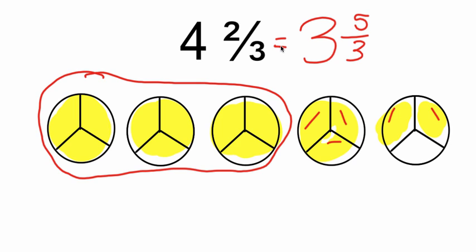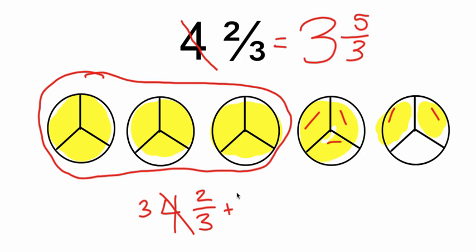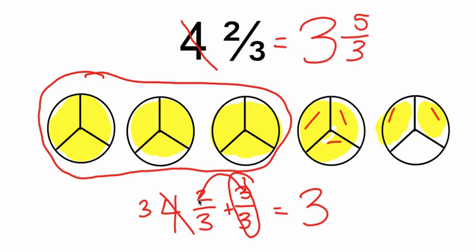So four and two-thirds is the same thing as three and five-thirds. All we did here was take a whole away from four, going from four down to three. When we took that whole away, we got three extra pieces. So if our fraction was four and two-thirds and we took away a whole, we're giving ourselves back three-thirds — one whole. Then our new mixed number is three, and two plus three is five-thirds.